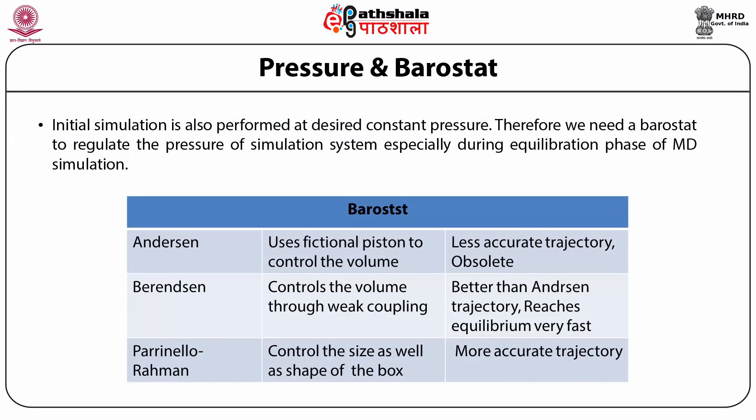MD simulations experiments are performed at constant pressure most of the time, so we need a barostat to regulate pressure. Three main types of barostats are used: Berendsen achieves equilibrium very fast but gives a non-canonical trajectory, while the Parrinello-Rahman algorithm gives a good trajectory matching the biological system but is slower. Users can set up Berendsen barostat for equilibration and switch to Parrinello-Rahman for the production phase to balance speed and accuracy.